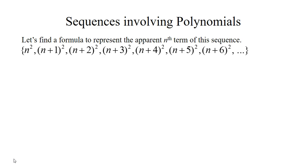Let's look at this sequence. We have n squared, n plus 1 squared, n plus 2 squared, and so on — we're increasing n by 1 for each term of the sequence. So this formula would be n squared. But let's see how it happens when we look for a common difference.